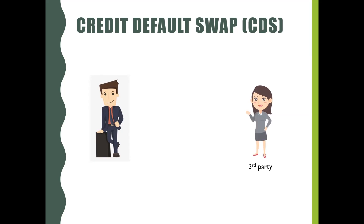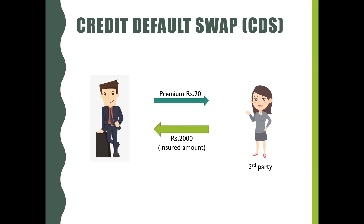Here, Alex pays a premium of say 20 rupees annually to Rita for an agreed time period, and if company C defaults on his principal and interest, Rita would pay him 2,000 rupees as per agreement. On the other hand, if company C does not default, Rita gets to keep the premiums paid by Alex.